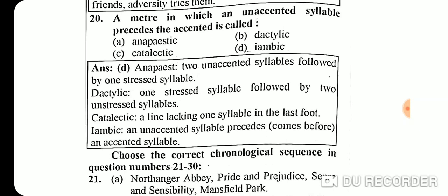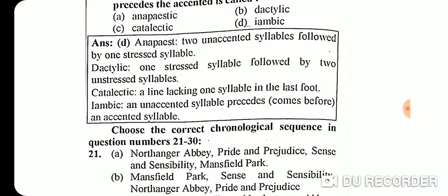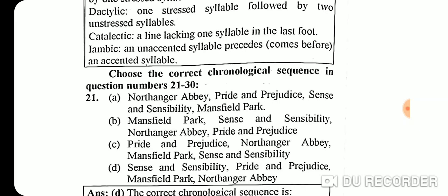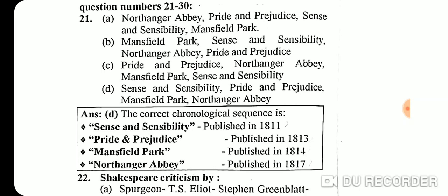Question 20: A meter in which an unaccented syllable precedes the accented is called iambic. In anapest, two unaccented syllables are followed by one stressed syllable. In dactyl, one stressed syllable is followed by two unstressed syllables. In iambic, an unaccented syllable comes before an accented syllable.